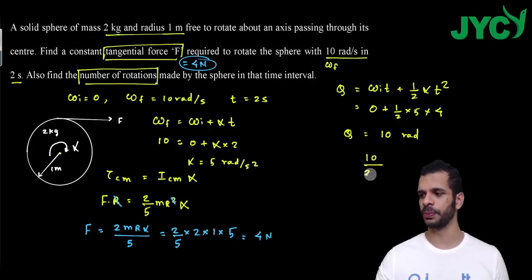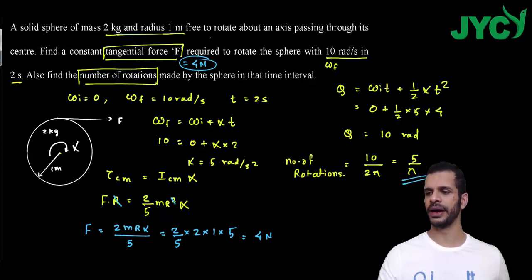Which is equal to 10 radians. Now number of rotations, so my number of rotations is theta divided by 2π, so my number of rotations is 5 by π. So 5 by π, this is my number of rotations.